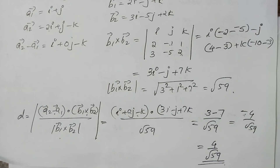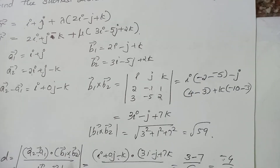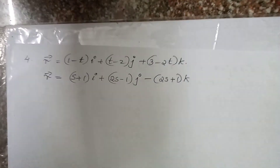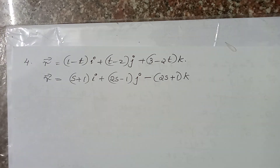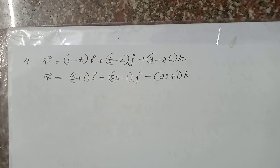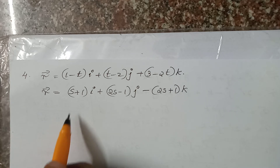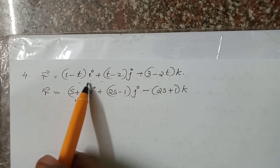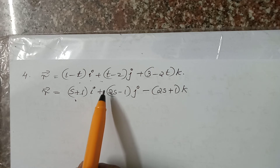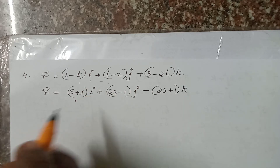This is the last answer. The shortest distance is 4 by root 59. You can learn this question. We will take the exam. This is a typical problem. We have all questions in common with the straight line. We need to find the shortest distance.